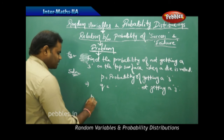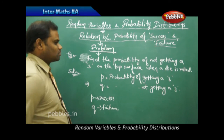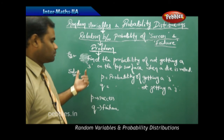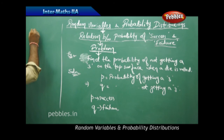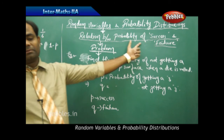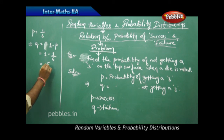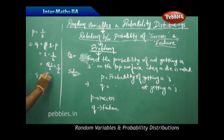So p relates to success and q relates to failure. The question asks for the probability of failure, q. Therefore, p — the probability of getting a three — is 1/6. Using the relation q equals 1 minus p, we get q equals 1 minus 1/6, which equals 5/6. Therefore, the probability of not getting a three on the top surface when a die is rolled is 5/6.